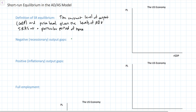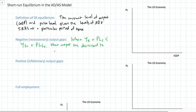A country is experiencing a negative output gap when equilibrium national output, which we'll call YE, and the equilibrium price level, which we'll call PLE, are less than the full employment level of output and the full employment price level. This scenario is called a recessionary gap because the country is producing a level of output below full employment — therefore the country is experiencing a recession, defined as a period of negative economic growth where output is decreasing over time.